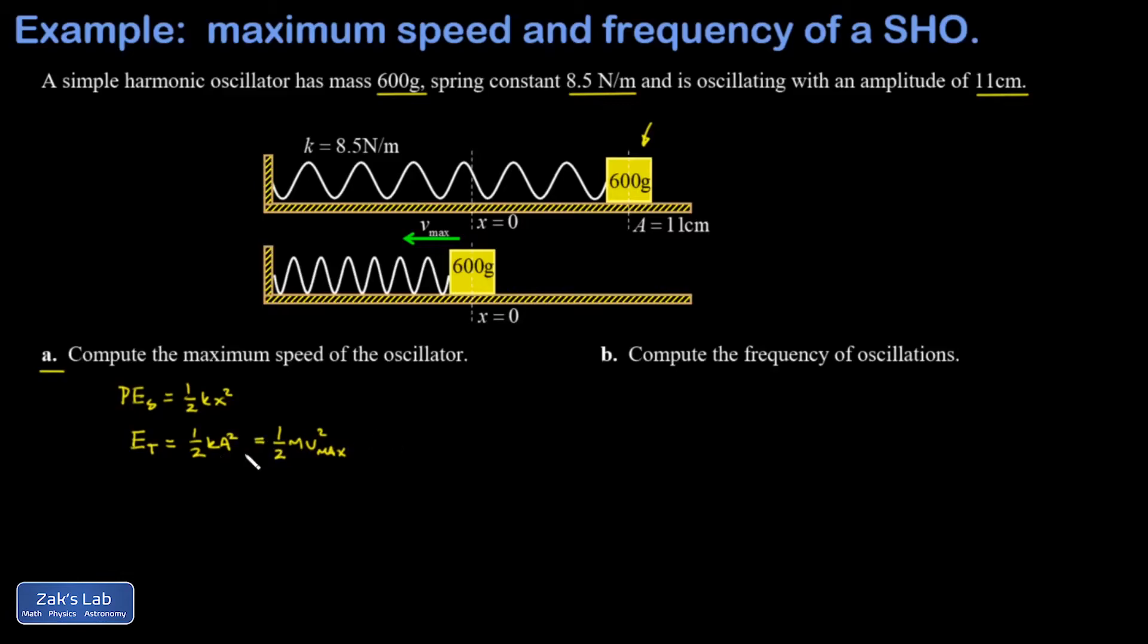I can quickly solve for v max. I multiply by 2, divide by m and square root both sides. I get v max is square root k over m times a squared. It might be nice if we factor out the a squared and write it as square root of k over m multiplied by a.